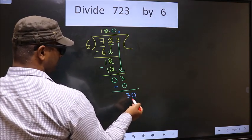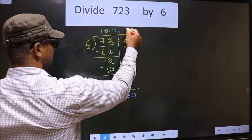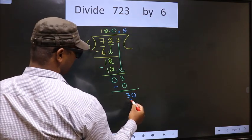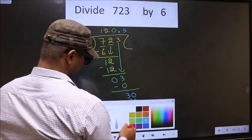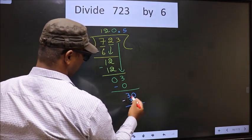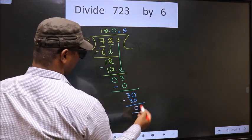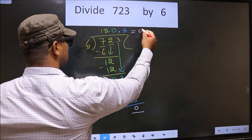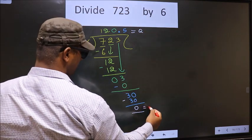So 30. When do we get 30 in the 6 table? 6 fives is 30. Now you subtract 30 minus 30 is 0. So this is our quotient and this is our remainder.